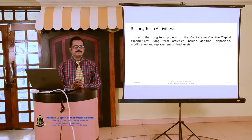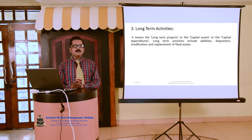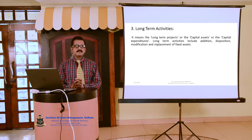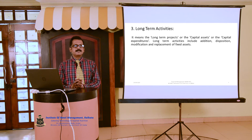Three, modification — modification means modernization or mechanization of a process. For example, mechanization of the production process. When we mechanize the production process of our business, it increases the production capacity and also reduces the cost of production. Four, replacement — replacement of a fixed asset means substituting an old asset with a new one.